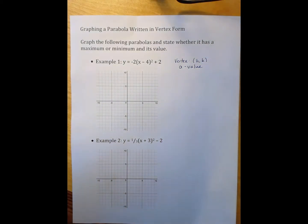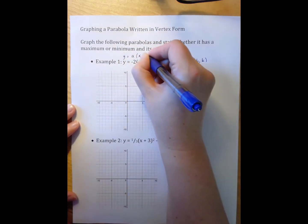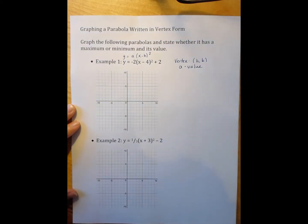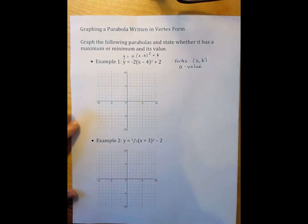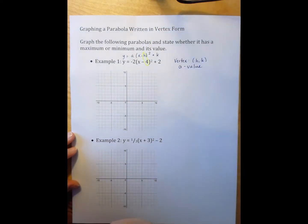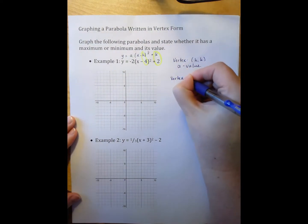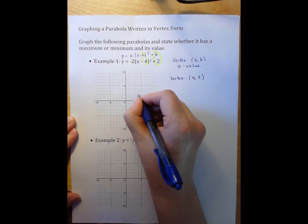So the first thing I'm going to do is find the vertex. You remember that the generic form for parabolas written in vertex form is y equals a times the quantity x minus h squared plus k. So my h value is 4 and my k value is 2. In this case, my vertex is (4, 2). So over 4, up 2.